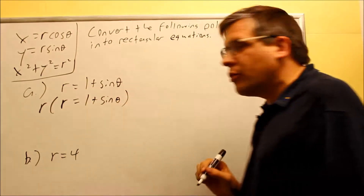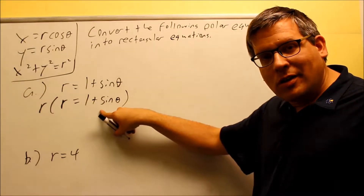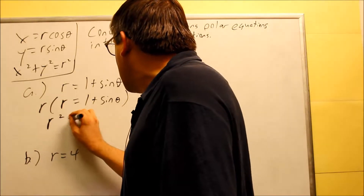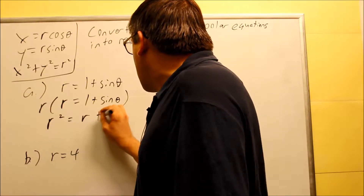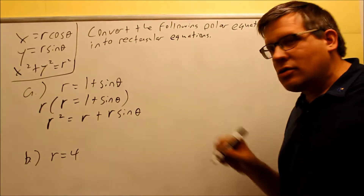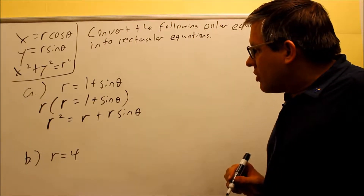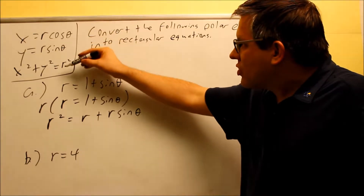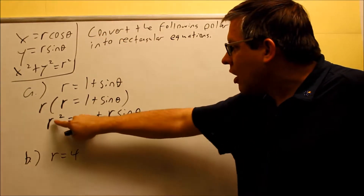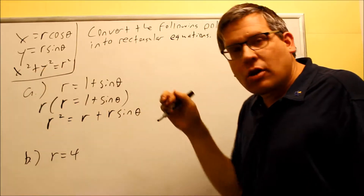So I want to purposely take this equation and multiply both sides by r. The only reason I want to do that is so I get an r next to the sine theta and I can plug in a value for that. So I get r squared is equal to r plus r sine theta. Now I need to see what substitutions I can make for each one.